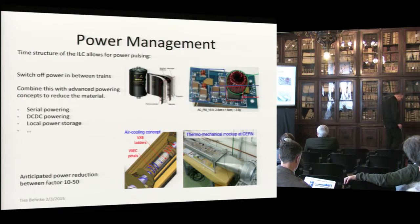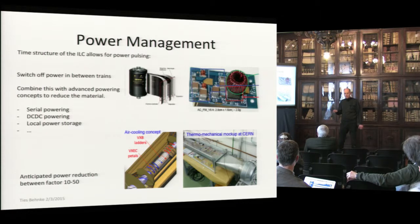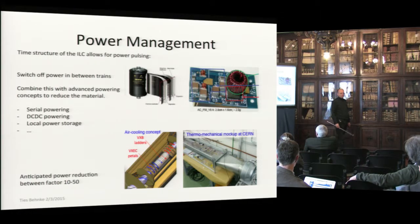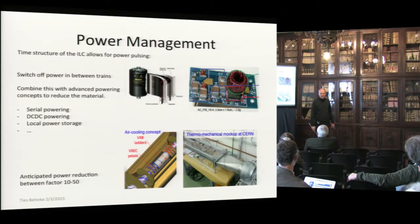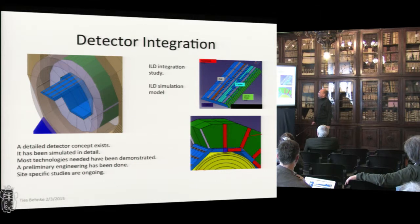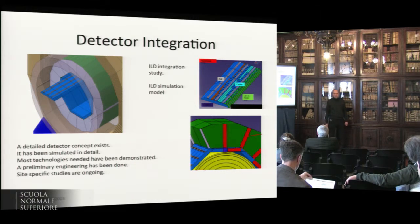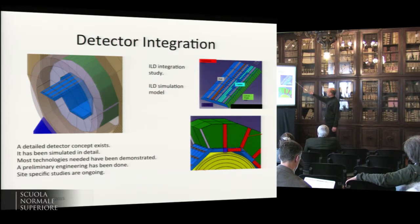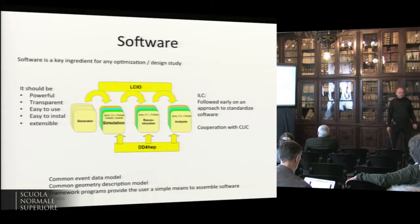Powering is an important issue. The ILC's pulsed operation with long inter-pulse times enables power pulsing — switching off detectors during quiet times — yielding a factor of 10–50 reduction in average power consumption. Intense R&D is ongoing to understand how to implement this and how to cool away remaining heat without liquid coolant. Integration studies show that cables and cooling can be implemented without destroying the physics performance, and these concepts are included in simulation to study their impact.